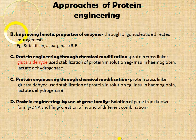Protein engineering through chemical modification: certain types of cross-linkers are used for modification of proteins. Glutaraldehyde is used for the stabilization of proteins in solution — examples include insulin, hemoglobin, and lactate dehydrogenase.